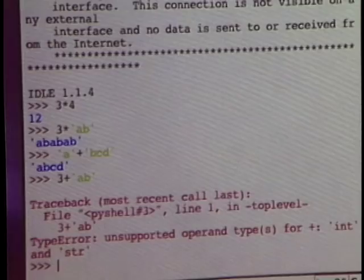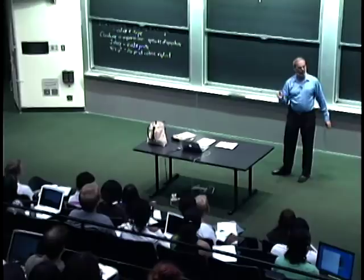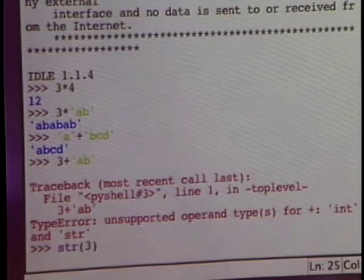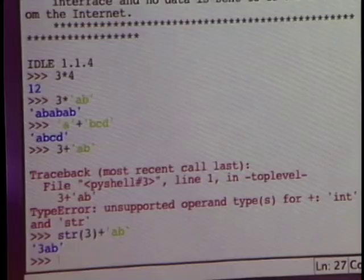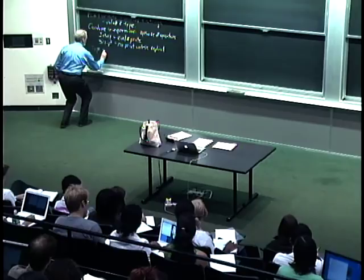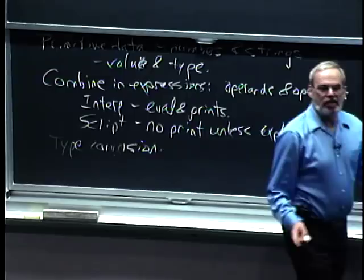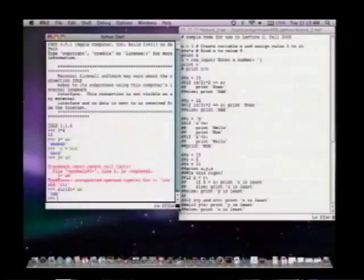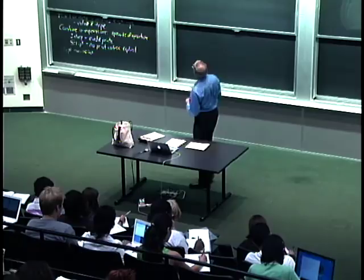If I wanted to combine a number and a string, I should tell the machine to do that explicitly by using type conversion — the str() function takes some input in parentheses and converts it into a string, so that I can use it where a string is expected. This is what's called type conversion.